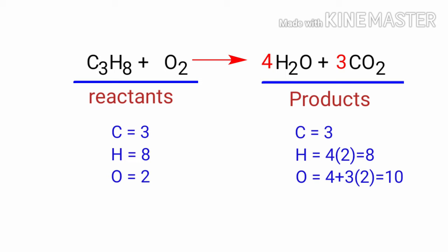Now we need to balance the oxygen atoms. To do this, we need to put a coefficient of 5 in front of O2. The equation is now balanced.